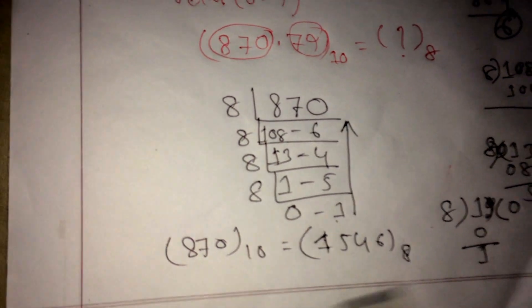The difference is: in the integer portion we divide by 8, but in the fraction portion we multiply by 8. So the fraction portion is 0.79. We multiply 0.79 by 8 and get 6.32 — the integer part is 6 and the float part 0.32. We multiply 0.32 by 8 and get 2.56.